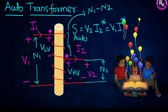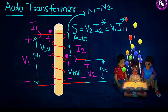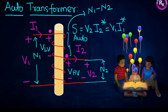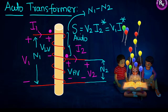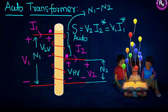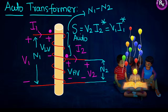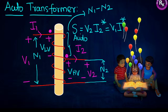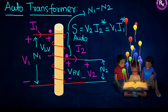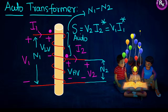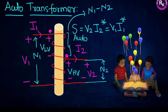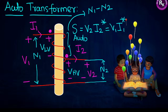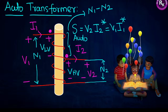Let us enter into the next part — the auto transformer. We have completely revised single-phase transformer, three-phase transformer and their corresponding parameters: equivalent circuits, voltage equations, voltage regulation, zero regulation condition, maximum voltage regulation condition, efficiency, maximum efficiency and its conditions, including three-phase transformer.